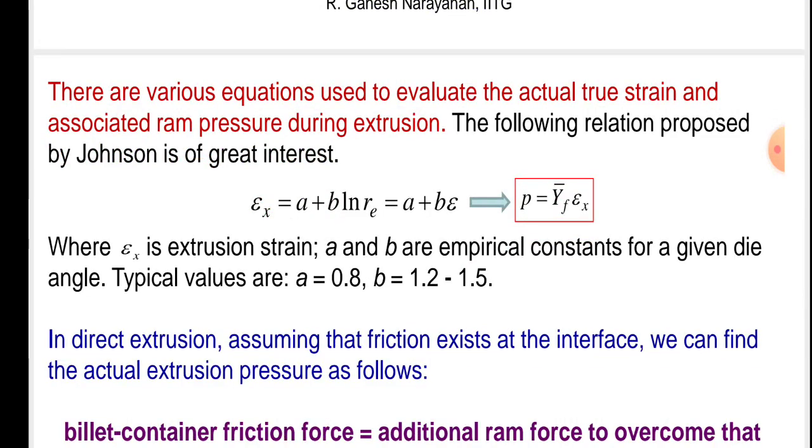There are various equations used to evaluate the actual true strain and associated RAM pressure during extrusion. The following equation proposed by Johnson is of great interest. Epsilon x equals A plus B log to the base 10 Re. Pressure equals Y̅f epsilon x, where epsilon x is extrusion strain. A and B are empirical constants for the given die angle. Typical values are A equals 0.8, B equals 1.2 to 1.5.